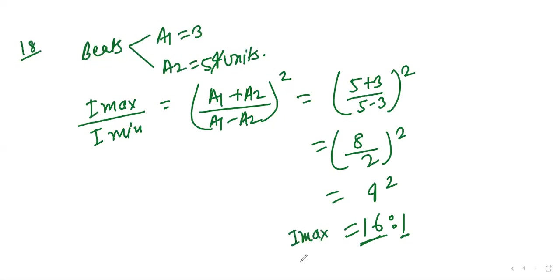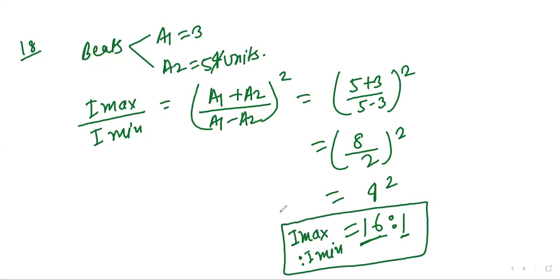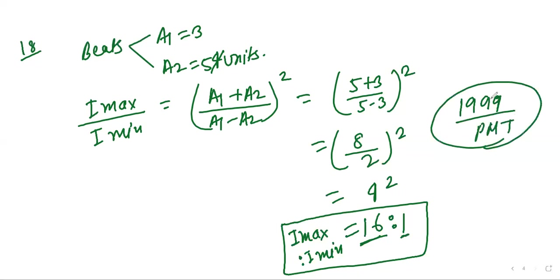The ratio I_max to I_min is 16:1. This question was asked in the 1999 PMT exam. Write it down.